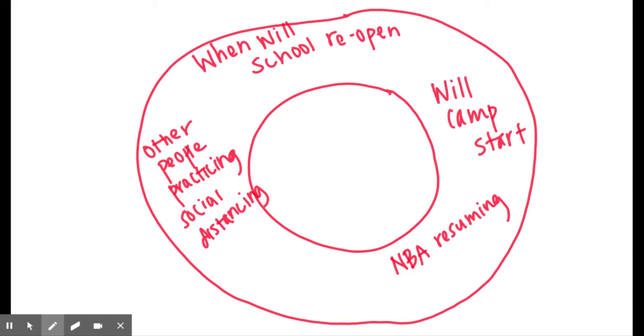So you may have already guessed it, but what this inside circle is, is what we do have control over. This is our control circle. And what we do have control over is, let's start with whether we practice social distancing.